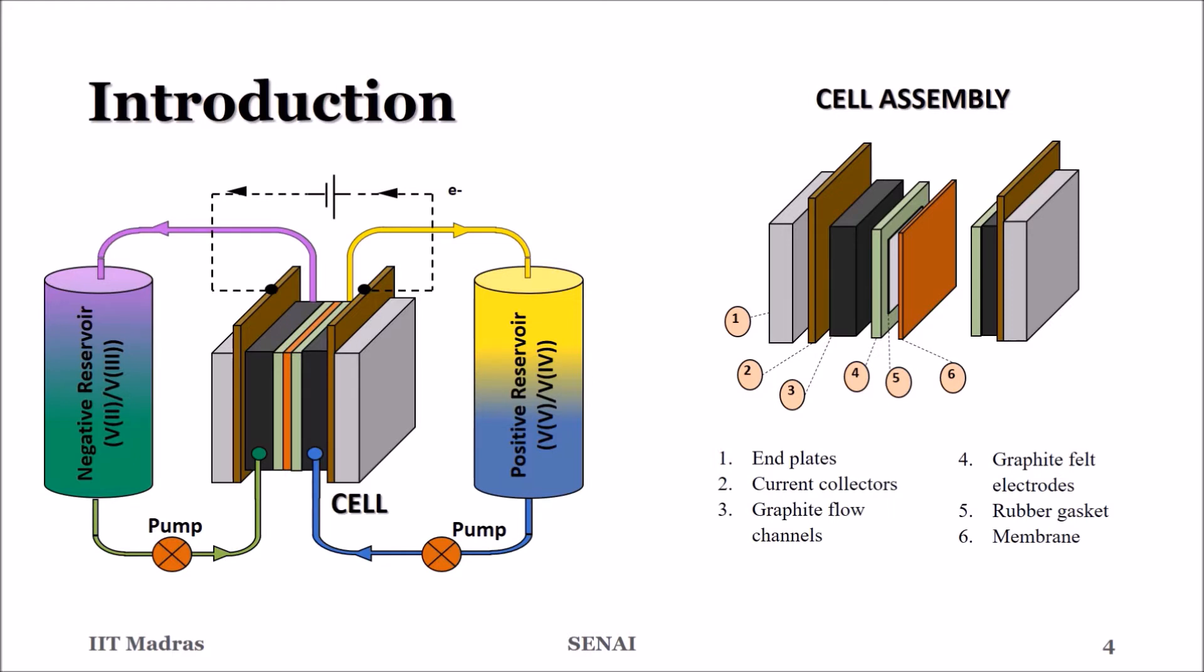Graphite flow fields on either side distribute the electrolytes into their respective electrodes. The current collectors act as terminals at both ends. The entire assembly is held together by the end plates at both ends.